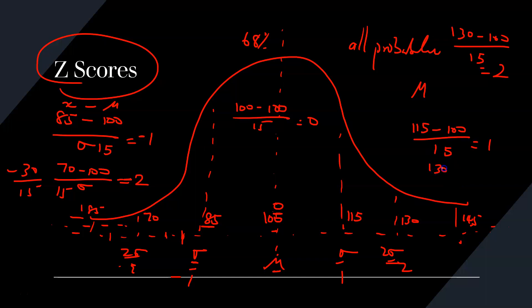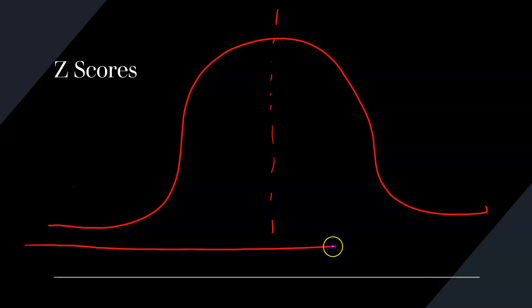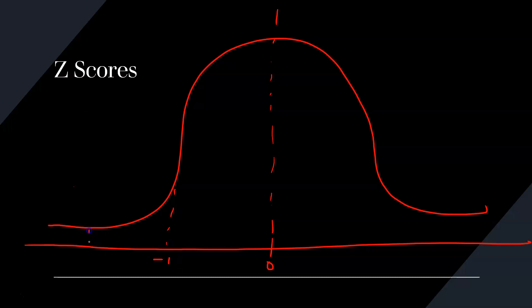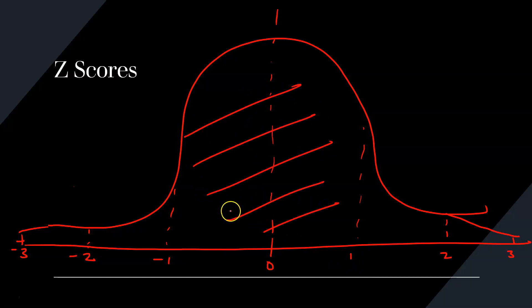And then 145 minus 100 over 15 gives you 3. So in Z score language, at the mean we have 0; at the first standard deviation minus 1, at the second minus 2, at the third minus 3; and on the positive side, Z scores of 1, 2, and 3. Between a Z score of minus 1 and plus 1 you have a confidence interval of 68%.